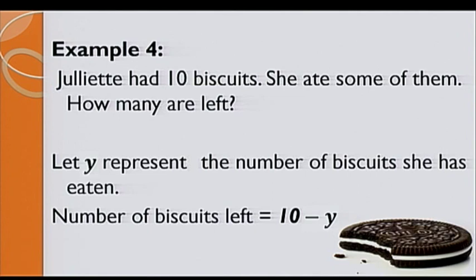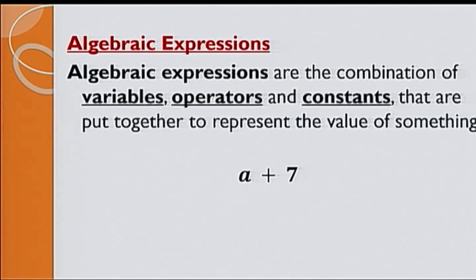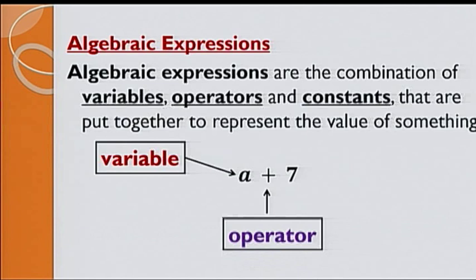Algebraic expressions. Algebraic expressions are the combination of variables, operators and constants that are put together to represent the value of something. Here is an example. A plus 7 is an algebraic expression. A represents the variable, plus represents the operator, and 7 represents the constant.